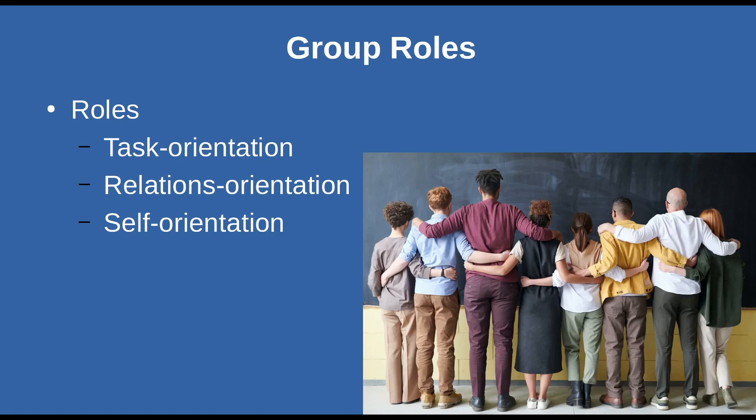Generally, there are three roles — or more accurately, three orientations — in a group. You have a task orientation, a relations orientation, and a self-orientation.